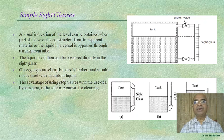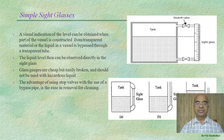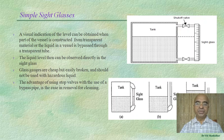Sight glasses help us check the level of liquid in a tank. This is a very simple and cheap method, but glass gauges are easily broken and should not be used for hazardous liquids.